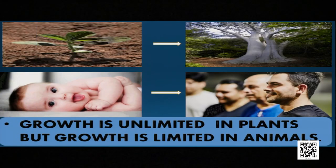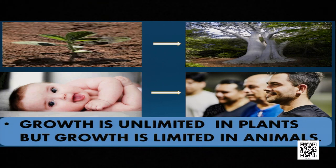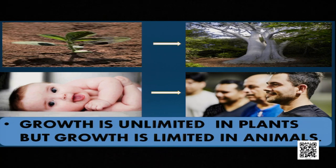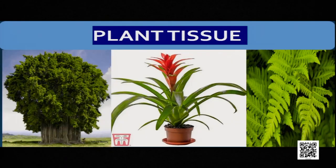The second difference: in plants the growth is unlimited. For example, a plant grows throughout its life — a branch is cut and again it grows. But in animals, growth happens up to a certain age; after that there is no growth at all. So growth is limited in animals but unlimited in plants. In this lesson we are going to discuss about plant tissue only.